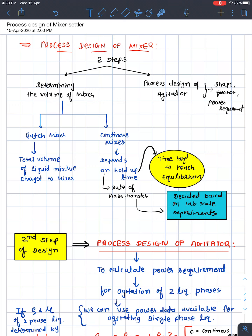The second step is designing the agitator, since when we are mixing things, we definitely require some kind of agitation. In that step we decide what should be the shape, what should be the factors, and what should be the power requirement — the basic need, which is our power requirement.